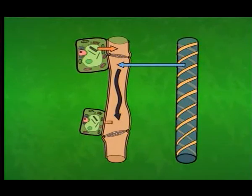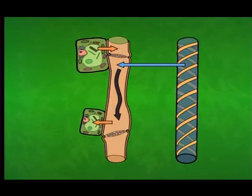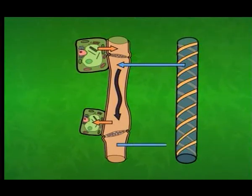When the glucose is unloaded at its destination, osmosis again moves water to equalize the concentration gradient, this time moving water from the phloem to the xylem.